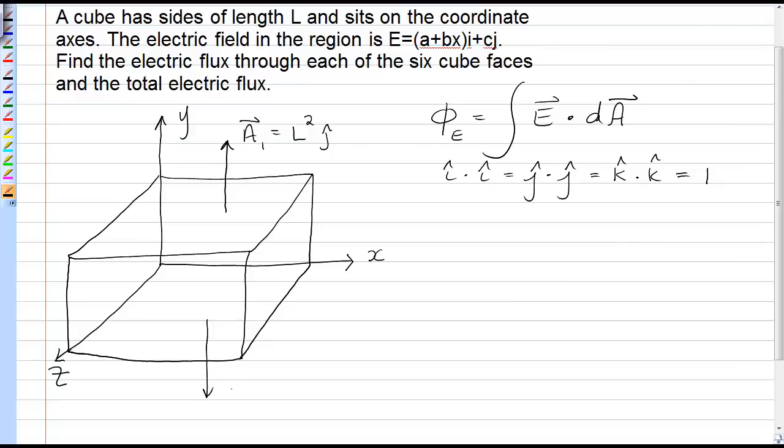The bottom face I'll call A2, it has also dimensions L squared and points in the negative j-hat direction. Face to the right I'll call A3, magnitude L squared, direction i-hat.